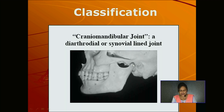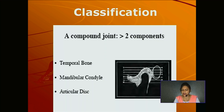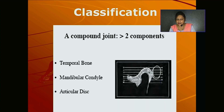The condylar process is also known as the head of the mandible. This joint is a synovial type of joint, and the articular surfaces are formed by the temporal bone — including the fossa and articular tubercle — and the head of the mandible or condylar process. This is a compound joint, with three components: the temporal bone, the mandibular condyle, and the articular disc.